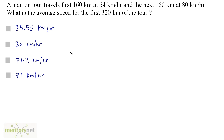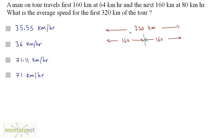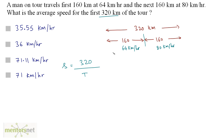A man on tour travels first 160 kilometers at 64 kilometers per hour and the next 160 kilometers at 80 kilometers per hour. What is the average speed for the first 320 kilometers of the tour? Average speed equals total distance upon total time, which is 320 by the total time. That total time is t1 plus t2 — the time to cover the first 160 km plus the time to cover the next 160 km.